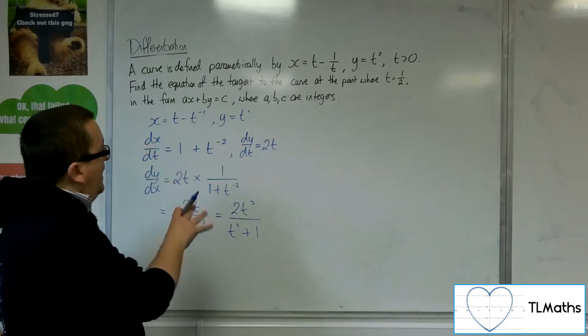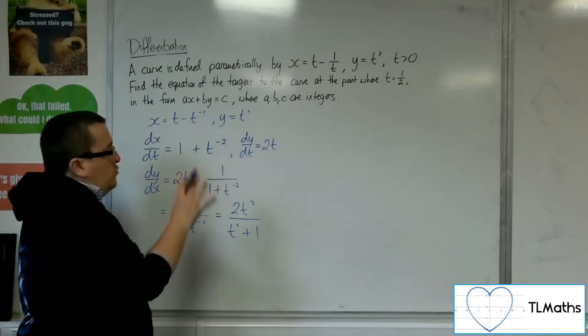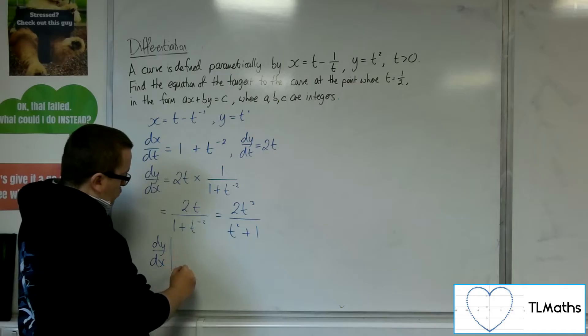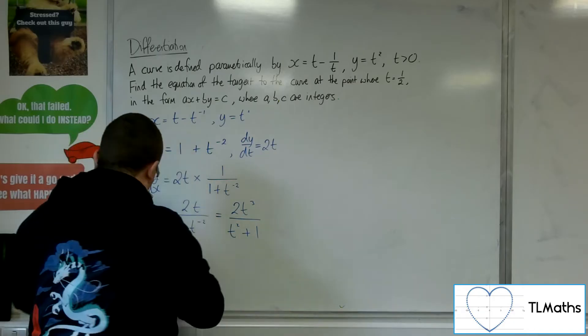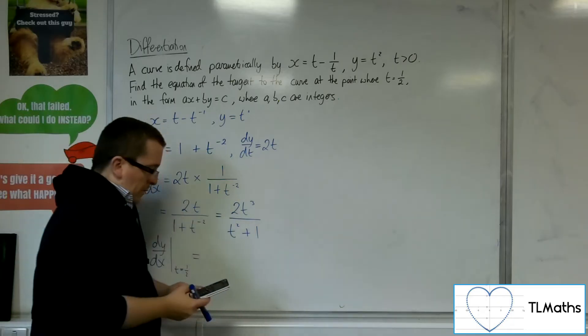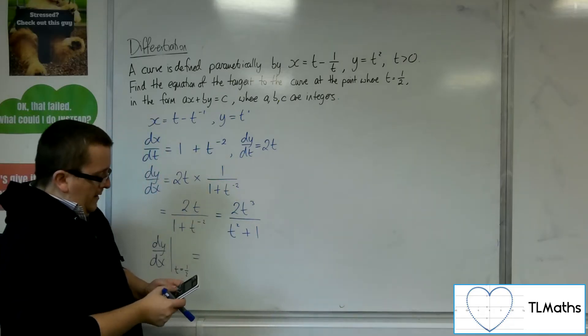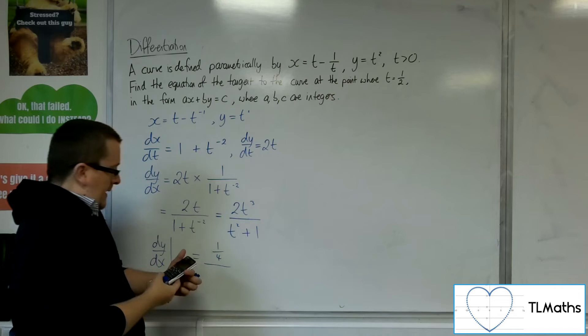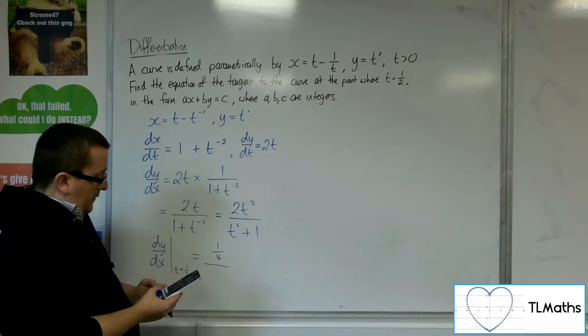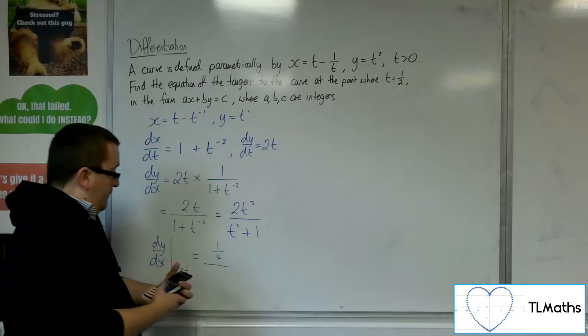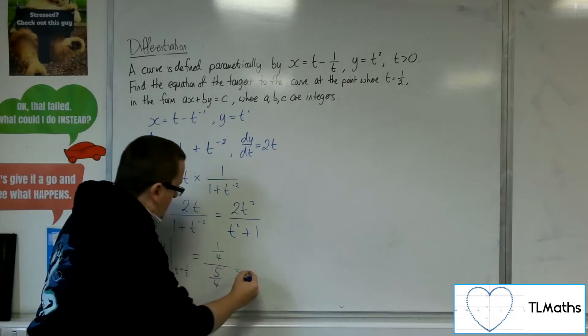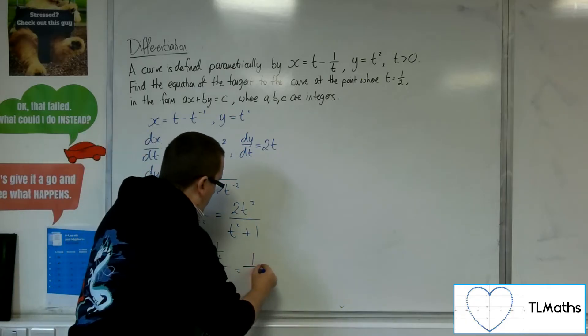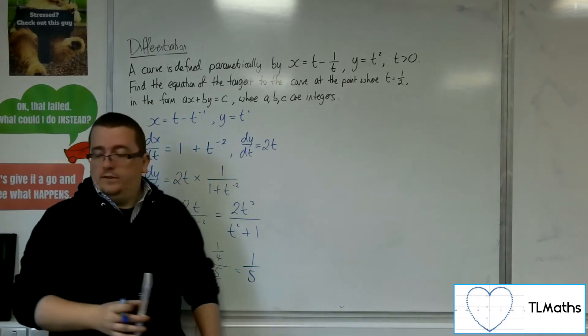Now, this is going to allow me to find the gradient of the tangent at t equals 1 half. So, I can substitute t equals 1 half into this. So, I'm going to have 2 lots of 1 half cubed. So, 1 quarter in the numerator. And in the denominator, I've got 1 half times 1 half. So, 1 quarter plus 1. So, 5 quarters. So, we've got 1 quarter divided by 5 quarters is 1 fifth. So, that is the gradient of the tangent that I want.